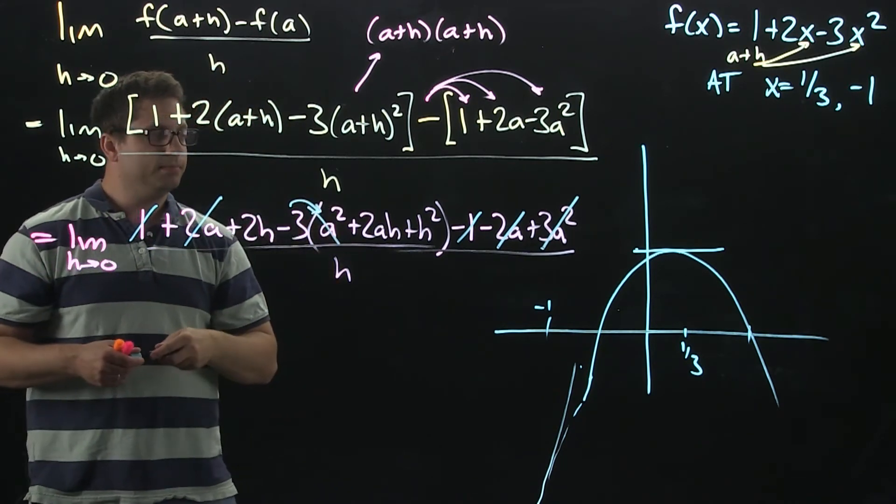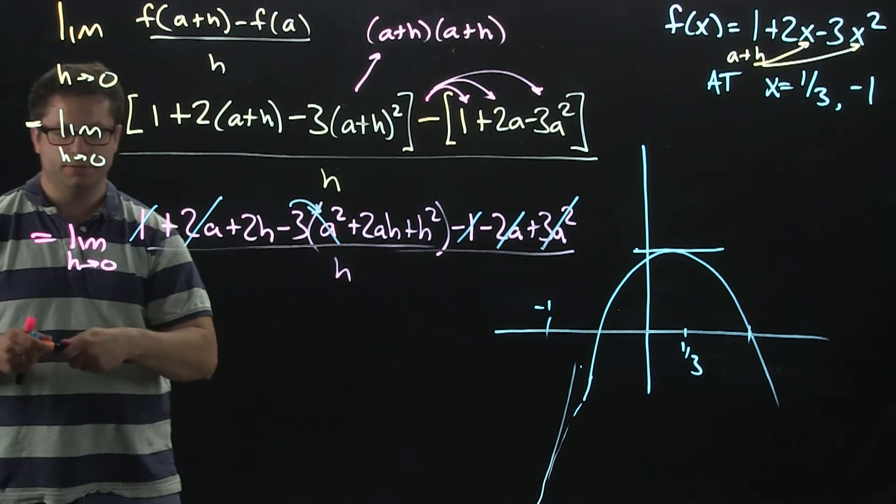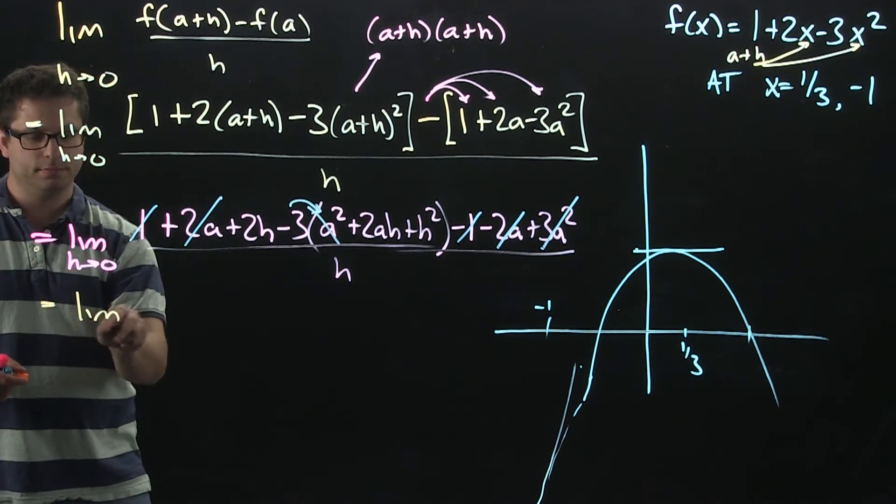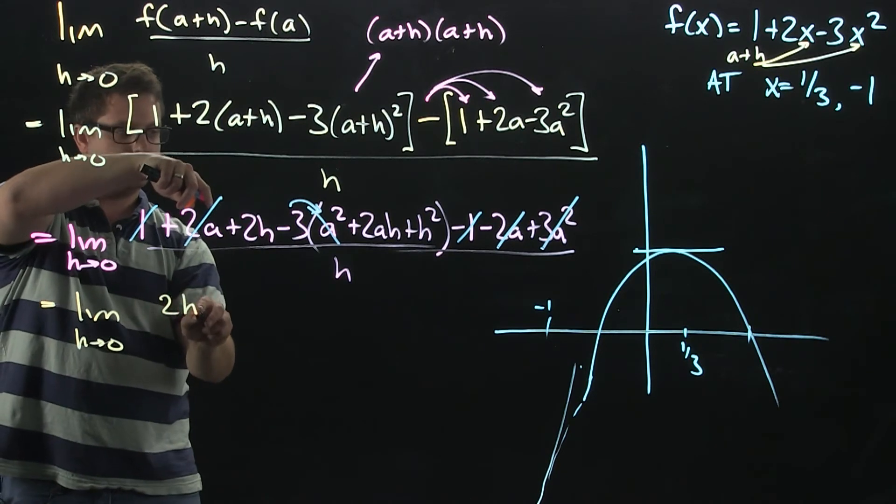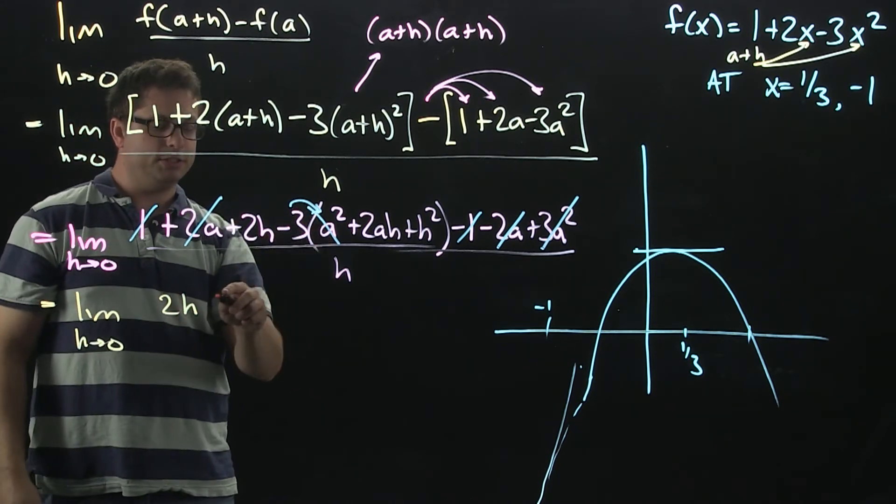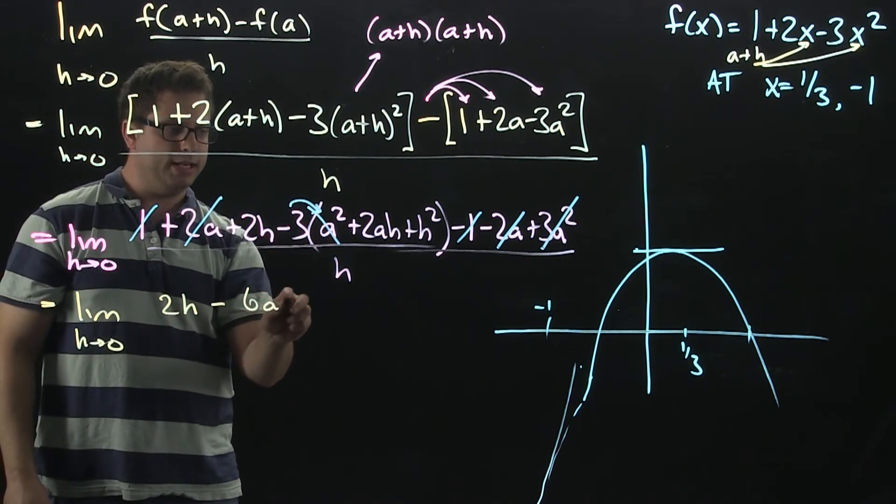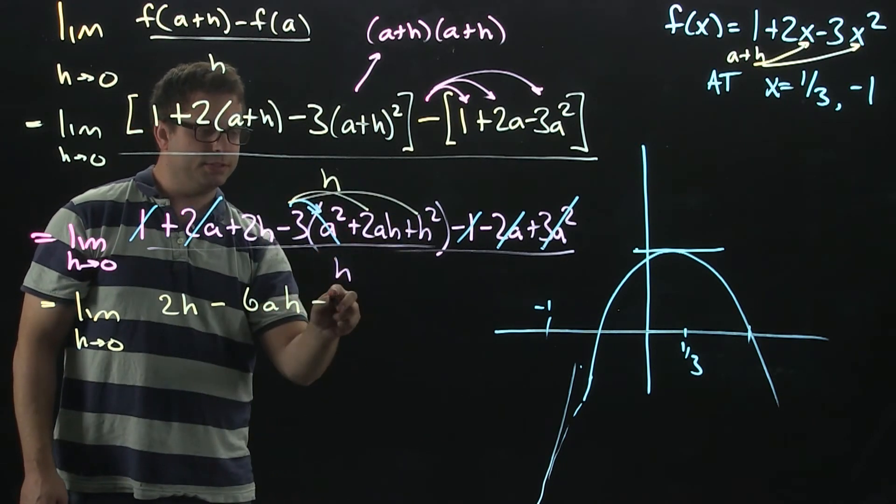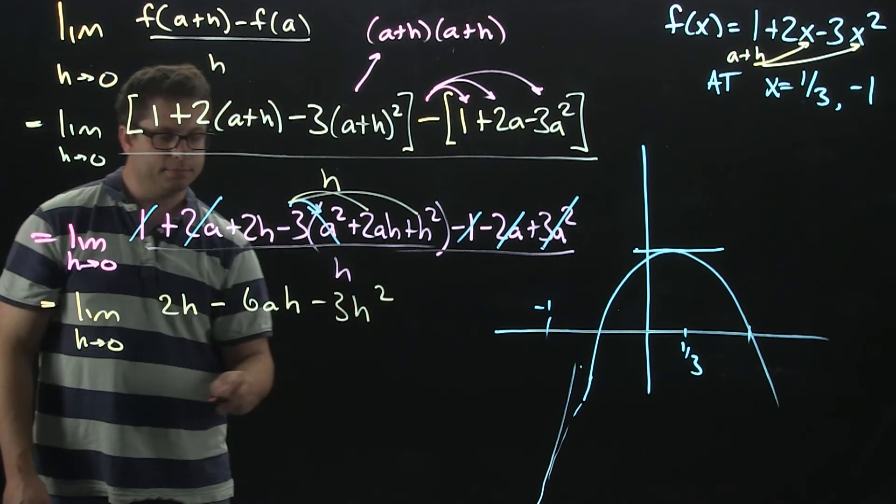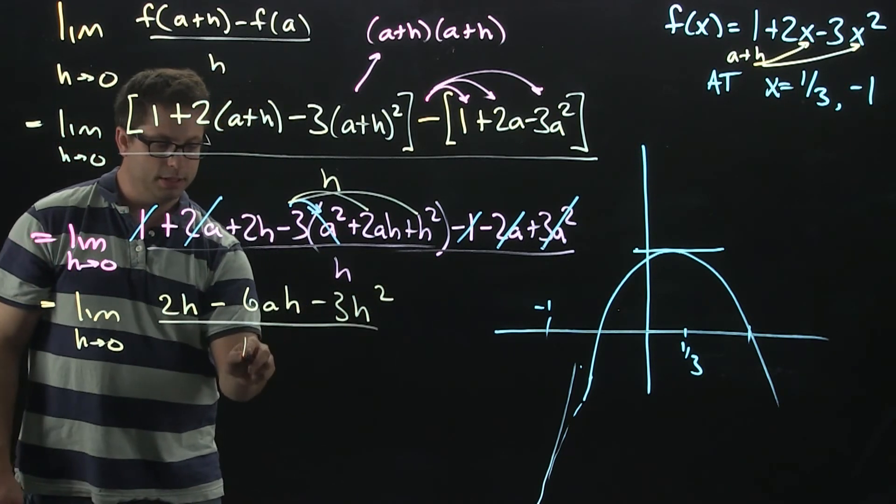What's left, you're going to have your 2h. When I distribute this minus 3, you're going to get minus 6ah. It's right there. Minus 3h squared. All over h.